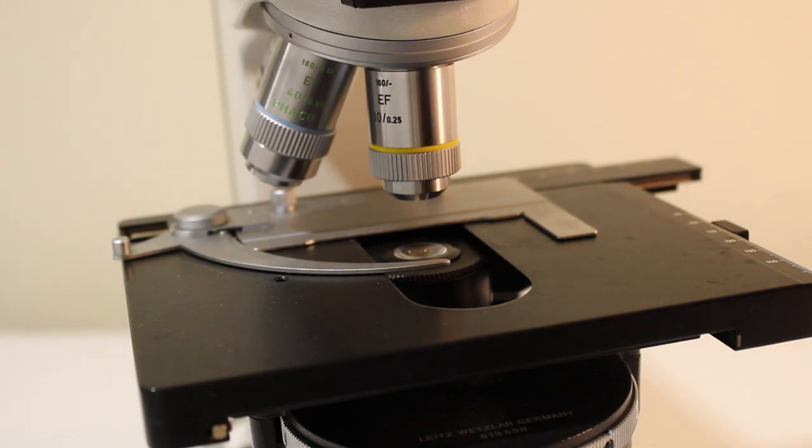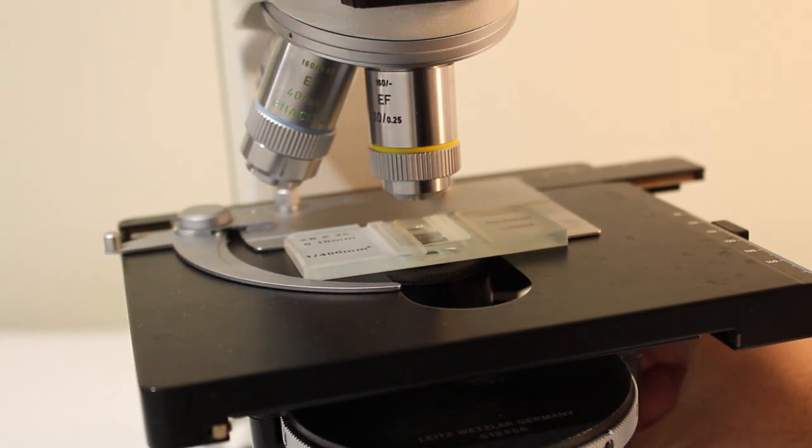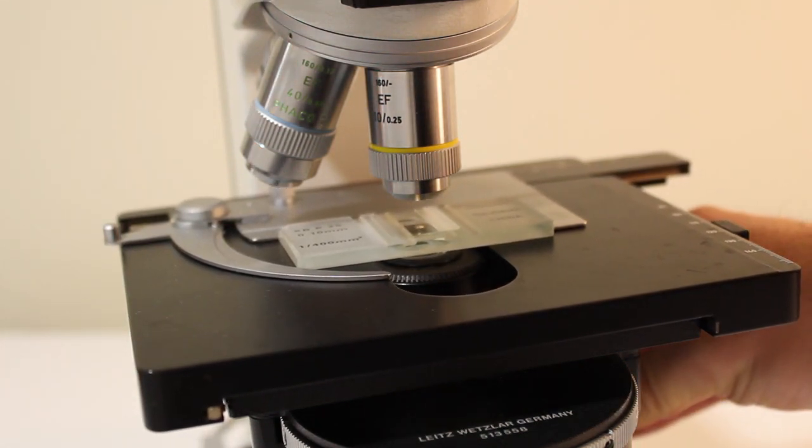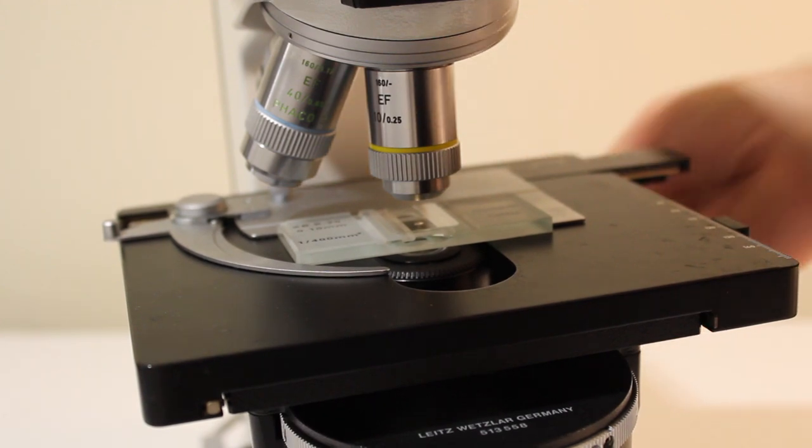Once your hemocytometer is loaded, place it onto the stage of your microscope, center your microscope over the grid in which you're planning on counting, and then focus on the grid using your lowest magnification lens.